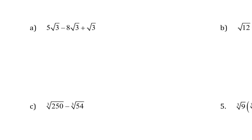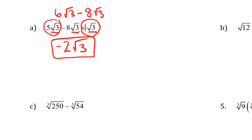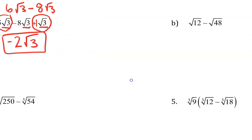Hopefully you've done these on your own. The first thing we do is look and make sure that they are like terms. We also recognize that the last radical 3 is really 1 times radical 3. So how many of these do I have? On the positives I have 5 and one more — that's 6 radical 3. Then minus 8 radical 3. 6 of them minus 8 of them is negative 2 radical 3.